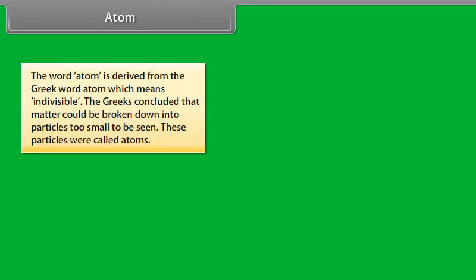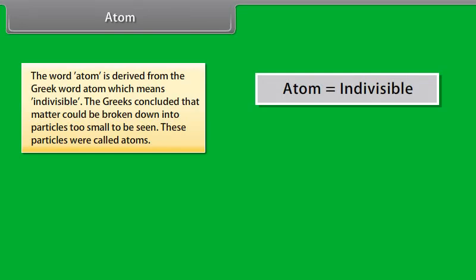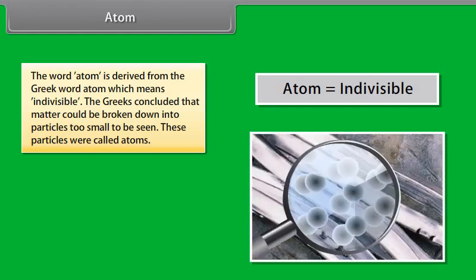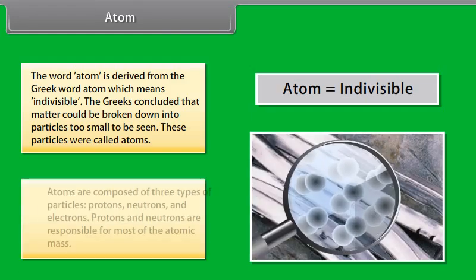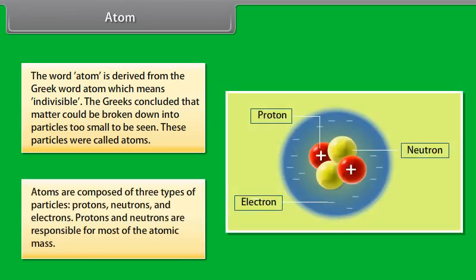Atom. The word atom is derived from the Greek word atom, which means indivisible. The Greeks concluded that matter could be broken down into particles too small to be seen. These particles were called atoms. Atoms are composed of three types of particles: protons, neutrons and electrons.